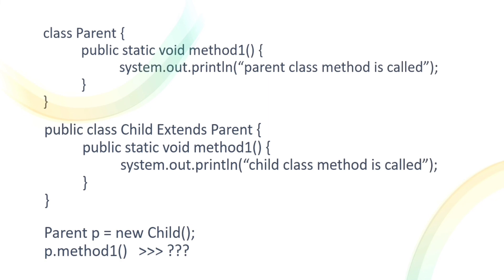This concept is called method hiding. So if asked what happens when you override a static method, you say method hiding occurs. If asked what is method hiding, you can explain this same example. The child class method is hidden, not overridden.